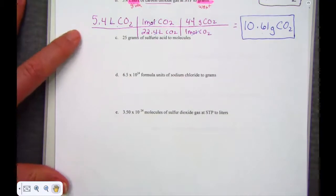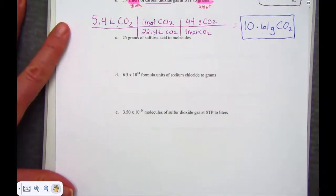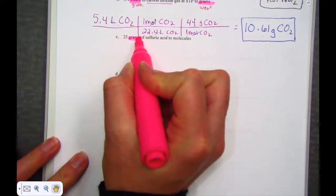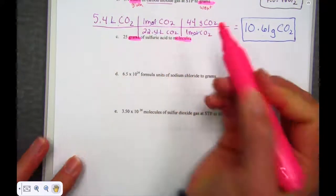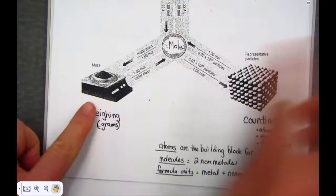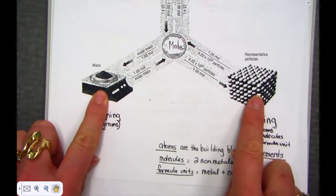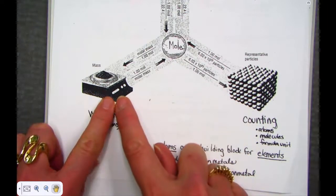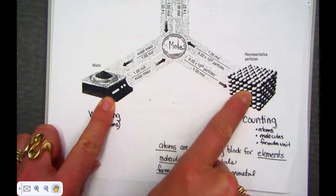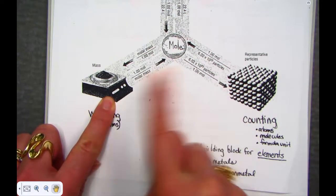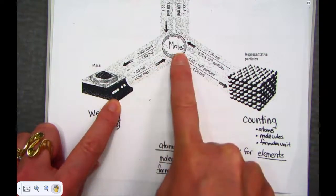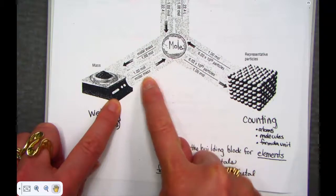Let's try letter C: 25 grams of sulfuric acid to molecules. We're given a mass in grams and we want to go to the number of molecules. Given a gram, we want to know particles — there's no direct road, but I do see a pathway. Going from grams into the mole using molar mass, and then out to the representative particles called molecules. We divide to head in and multiply to head out. Moving from mass to mole requires the molar mass of our compound, and step two will involve Avogadro's number.